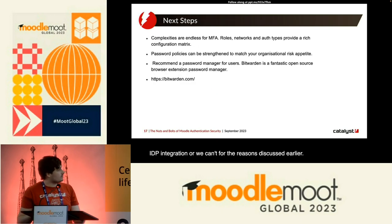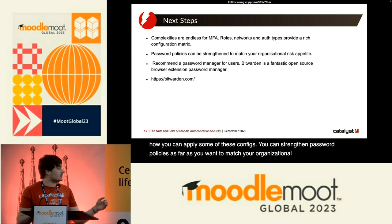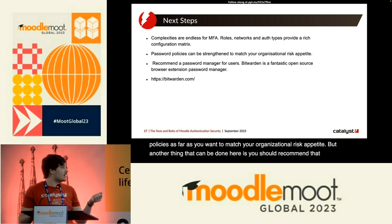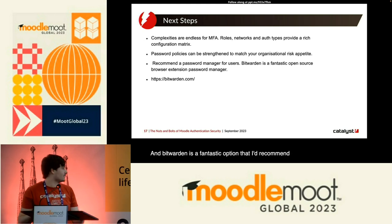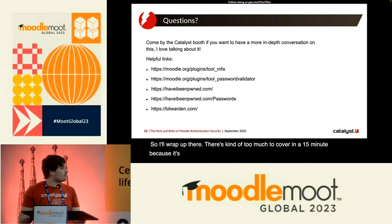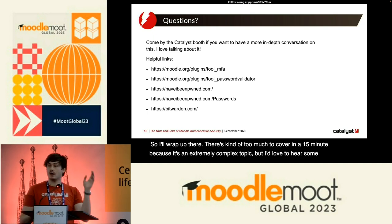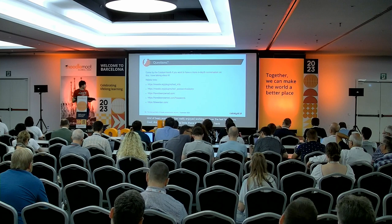Where you go from here, the complexities are endless. Roles, networks, and auth types all provide a really rich configuration matrix. You can strengthen password policies as far as you want to match your organizational risk appetite. Another thing you should do is recommend that a password manager is used by your users — it's one of the most effective ways to reduce credential reuse. Bitwarden is a fantastic option I'd recommend. There's too much to cover in 15 minutes as it's an extremely complex topic, but I'd love to hear some questions. Come over to the Catalyst booth and I'm happy to talk more. There are helpful links to the plugins, to Have I Been Pwned, and to Bitwarden.